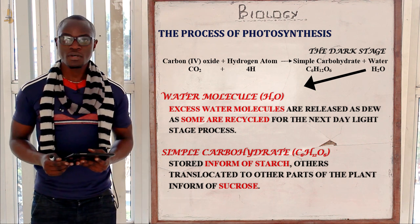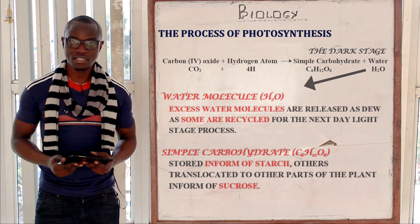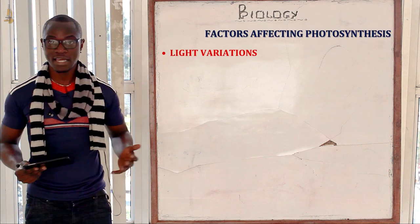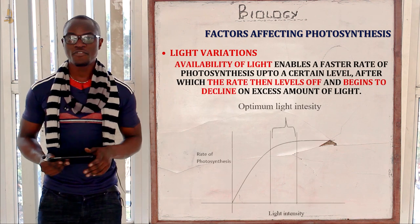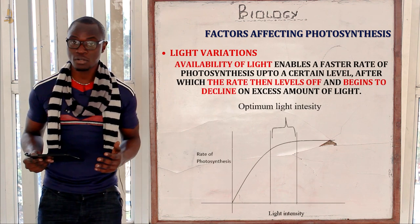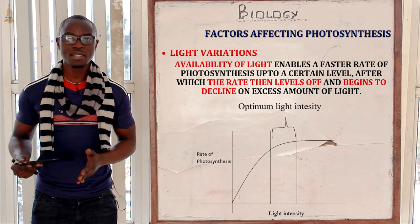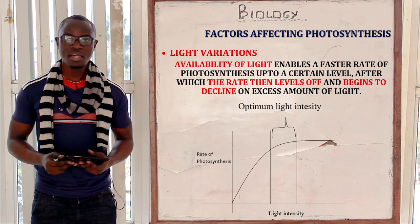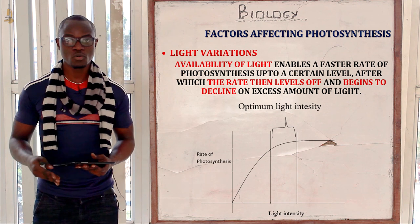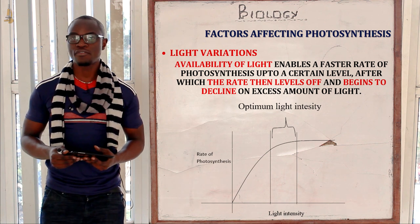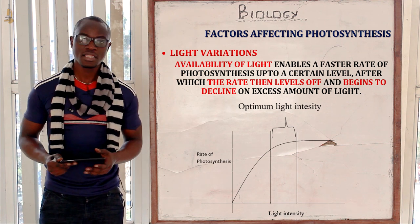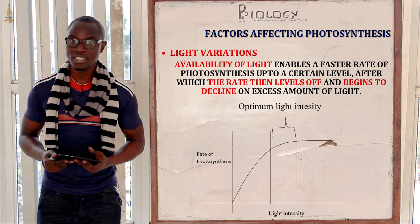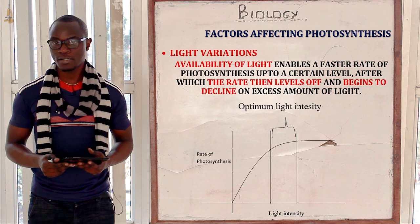Now let's look at the factors affecting photosynthesis. Let's begin with light intensity. If light is available, photosynthesis will proceed at a rapid rate. The more the light intensity, the more the rate of photosynthesis, up to a certain point, and then it levels off. Here, temperature and moisture content are the constant factors.